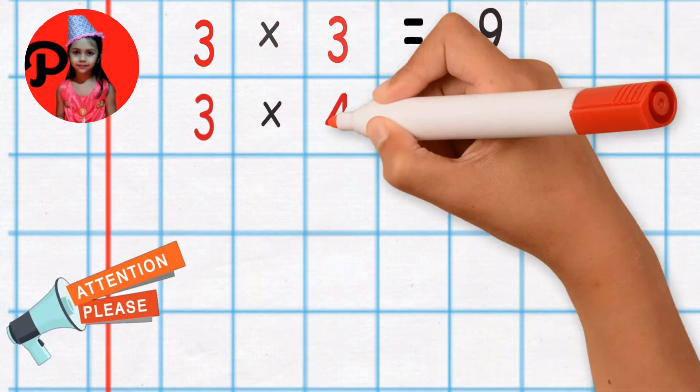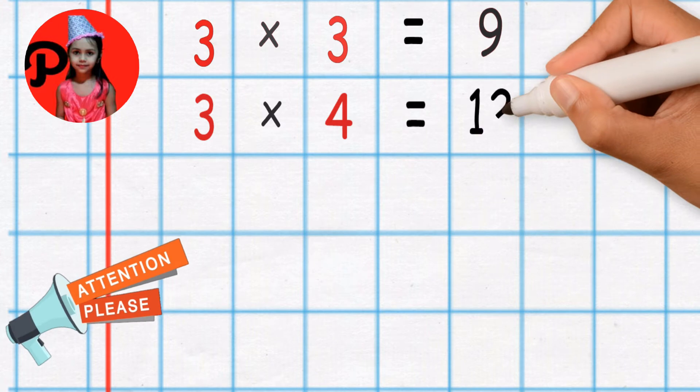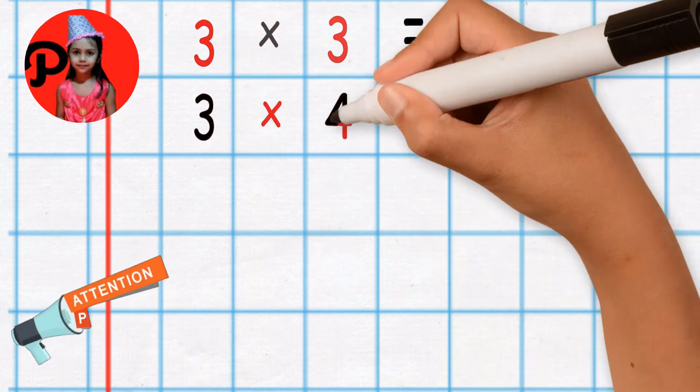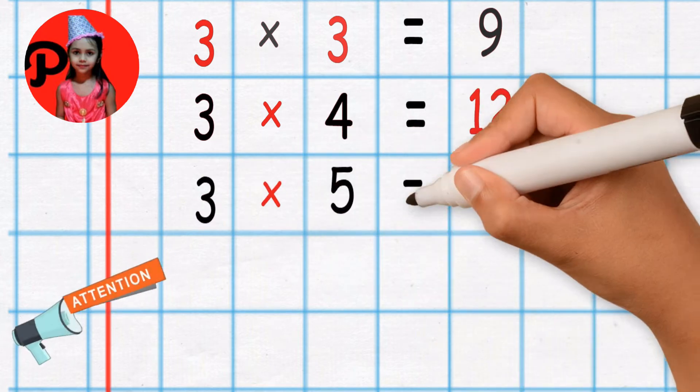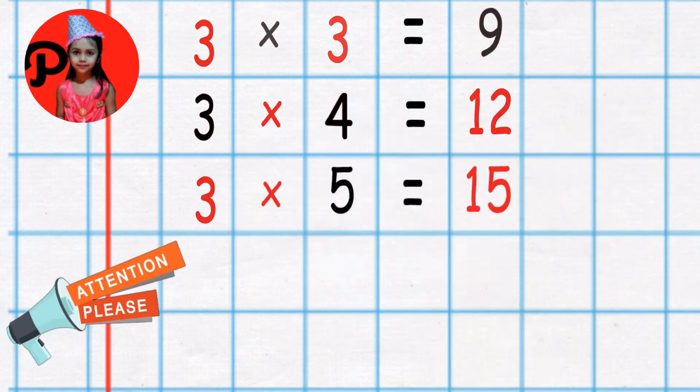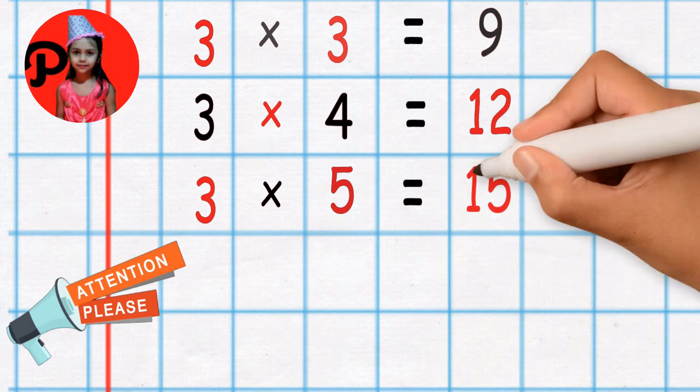3 4's are 12. 3 4's are 12. 3 5's are 15. 3 5's are 15.